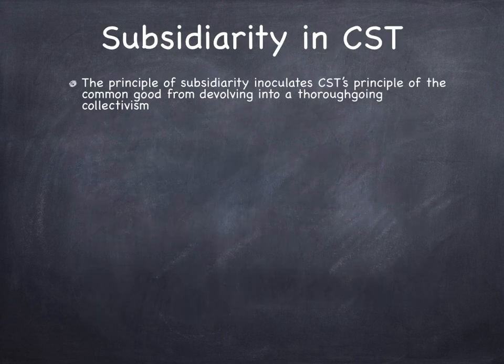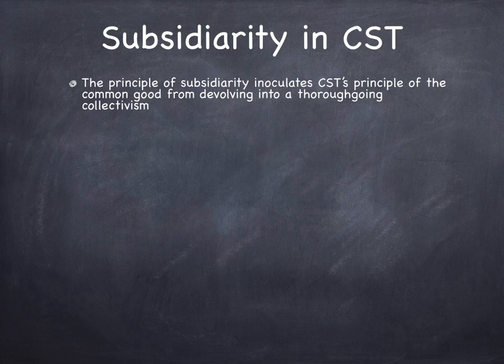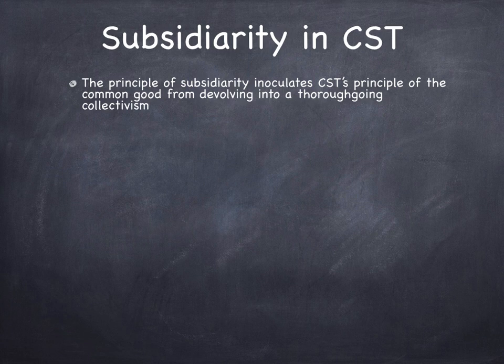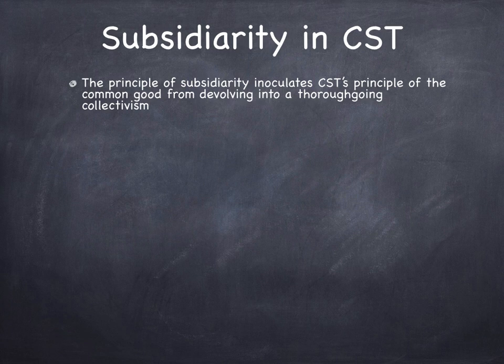In Catholic social theory, the principle of subsidiarity inoculates its principle of the common good from devolving into thoroughgoing collectivism. If the common good were the only principle, it could be a temptation for some theorists to assume that every government function should be performed at a very high, centralized, collectivist level. Subsidiarity prevents Catholic social theory from devolving into this kind of collectivism.